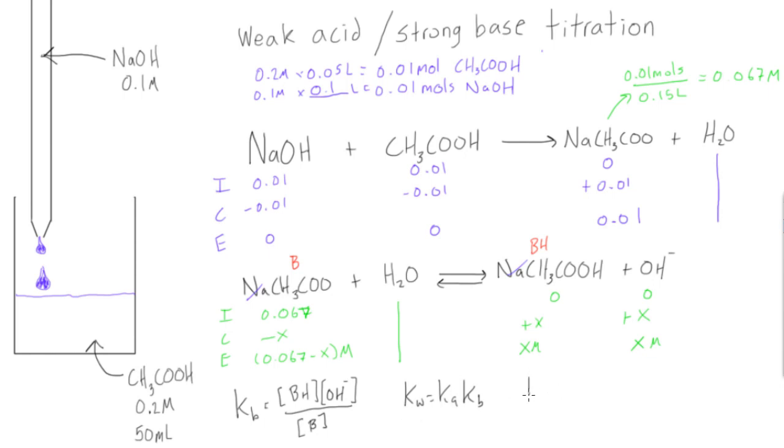KW is 1 times 10 to the negative 14 over KA of acetic acid which was 1.8 times 10 to the negative 5 equals KB. Our KB value is 5.6 times 10 to the negative 10.